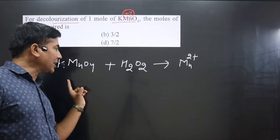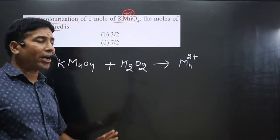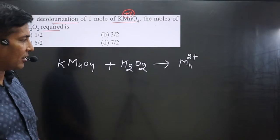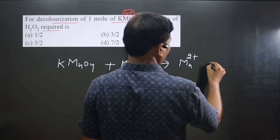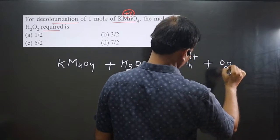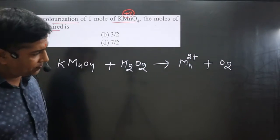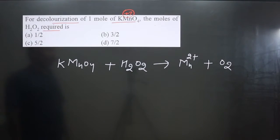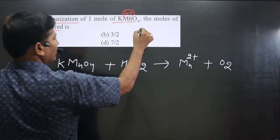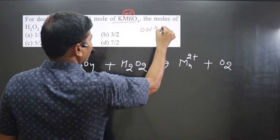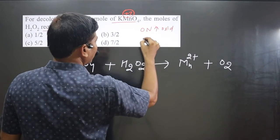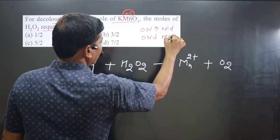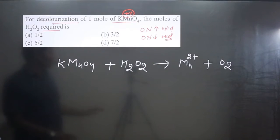KMnO₄ is the strong oxidizing agent and it oxidizes H₂O₂. When H₂O₂ undergoes oxidation, it converts into oxygen gas (O₂). Always keep in mind: an increase in oxidation number is oxidation, and a decrease in oxidation number is reduction.